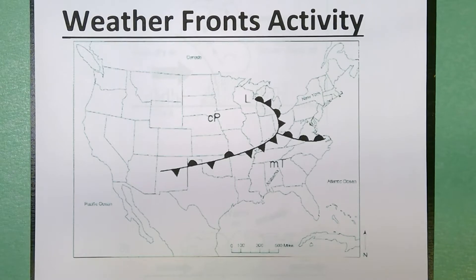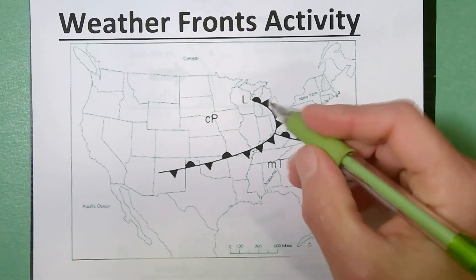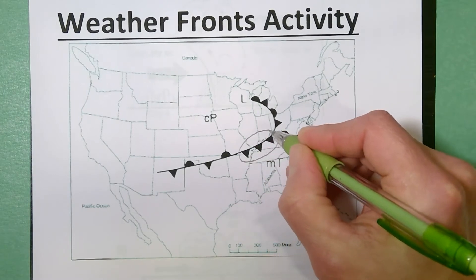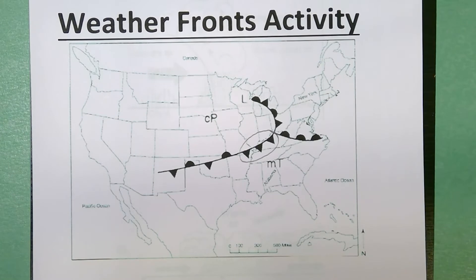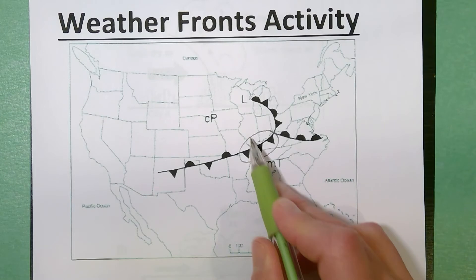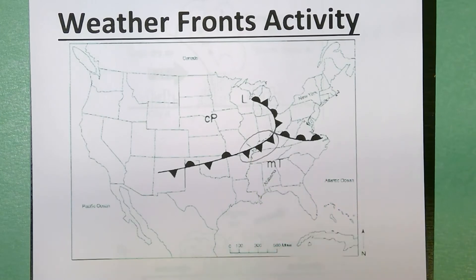So just to review fronts before we start the activity, right here you've got the symbol for a cold front. We're going to look at a cross section of what a cold front is, but a cold front is the triangles. You've got a continental polar air mass pushing into a maritime tropical air mass.